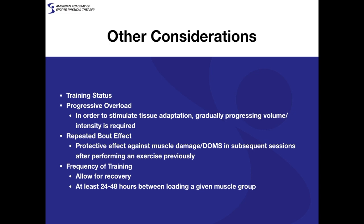Other considerations when prescribing strength training in this population include training status. If working with someone who has never weight trained before, the exercise prescription should be simpler — focus on two or three things and don't go overboard. Untrained individuals will start to see positive adaptations earlier on, but there's a learning curve with compound movements, so it's beneficial to stick with more isolated movements and potentially use machines rather than free weights. This will be largely patient-specific based on their needs, goals, and comfort level.